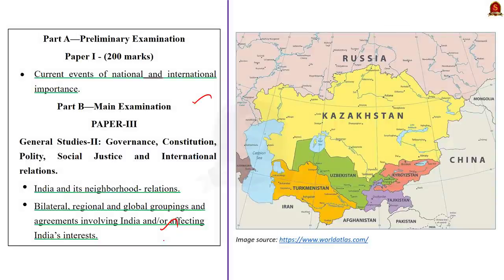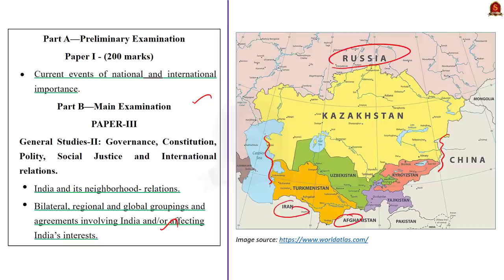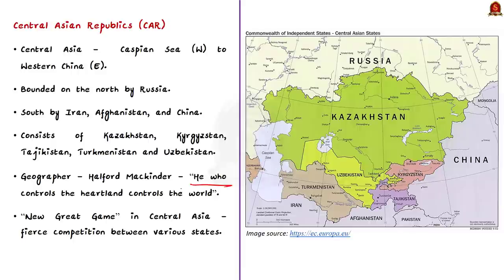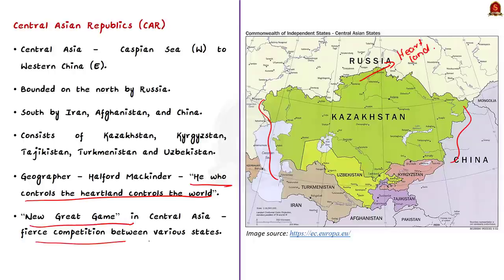Central Asia extends from the Caspian Sea in the west to the borders of western China in the east. It is bounded on the north by Russia and on the south by Iran, Afghanistan, and China. The region consists of the former Soviet republics of Kazakhstan, Kyrgyzstan, Tajikistan, Turkmenistan, and Uzbekistan — these five countries constitute the Central Asian Republics or CAR. The region is strategically vital for many countries including China, Russia, India, the United States, and Europe. Geographer Halford Mackinder observed: 'He who controls the heartland controls the world.'